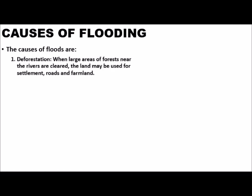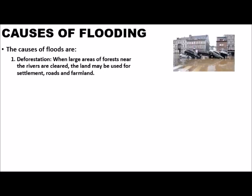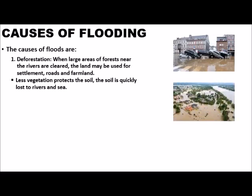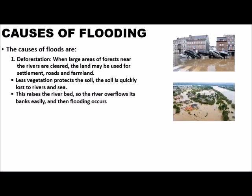Causes of flooding: 1. Deforestation — when large areas of forest near rivers are cleared, the land may be used for settlements, roads, and farmland. Less vegetation protects the soil, so the soil is quickly lost to rivers and seas. This raises the river beds, so the river overflows its banks easily, causing flooding.